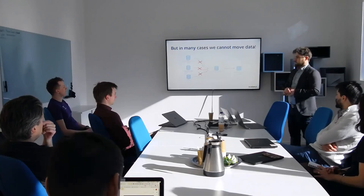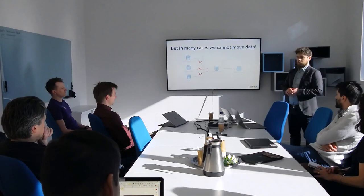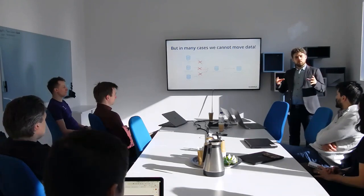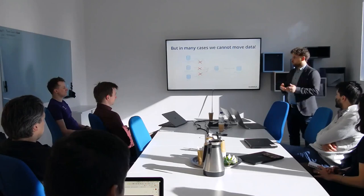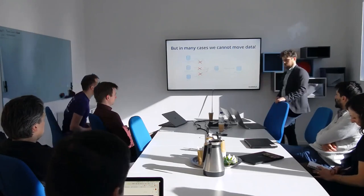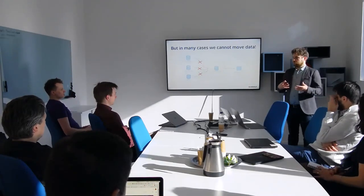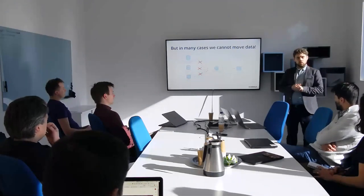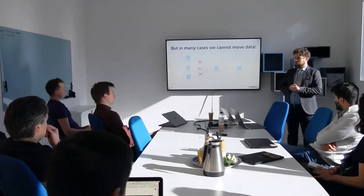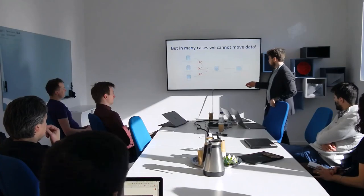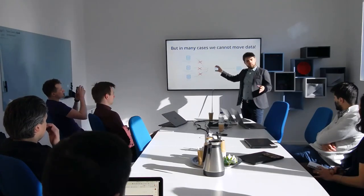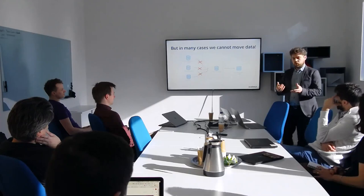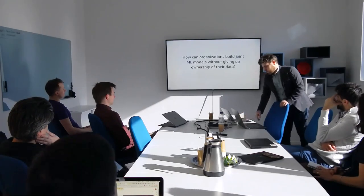One example is money laundering scandals — a big problem is that you're simply not allowed to use data from different countries and banks to build these models; it's regulated. It can also be that data is so large that pooling it would fill up network bandwidth and be both a cost and practical problem. In all these cases, the standard machine learning paradigm breaks because you cannot centralize the data.